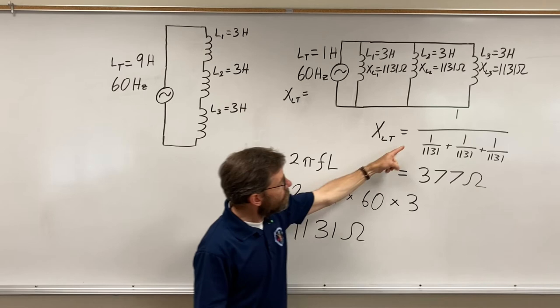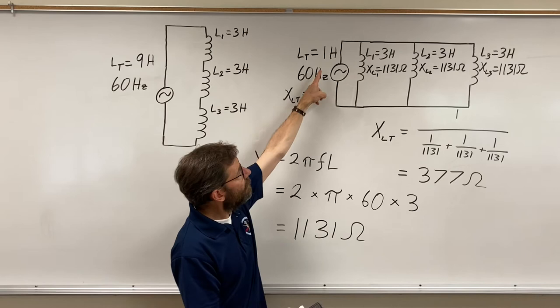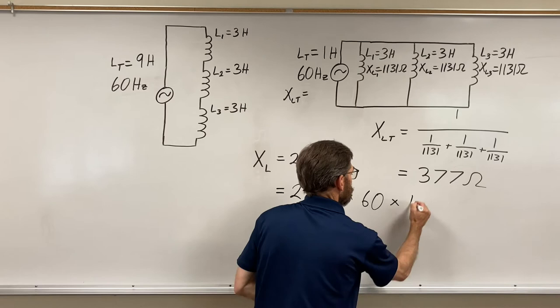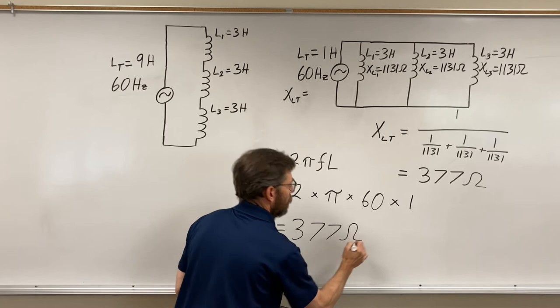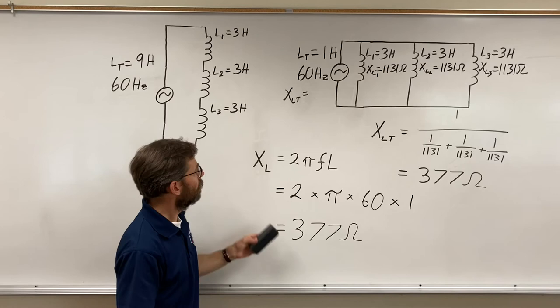So we calculate that at 377. What would this formula have been if we did one Henry instead of three Henry's? Plug that in your calculator. 377 ohms. So it works.